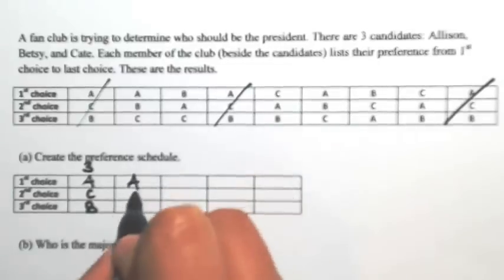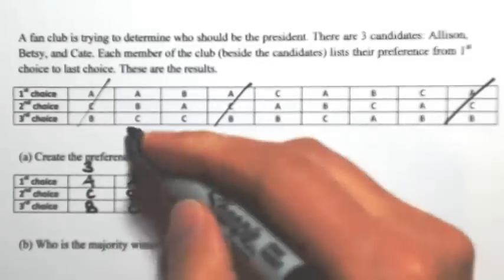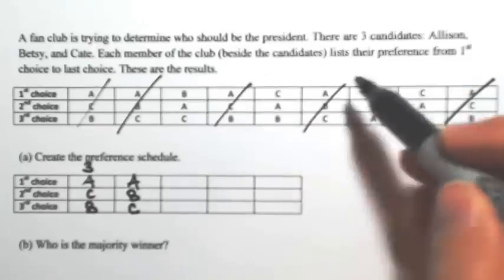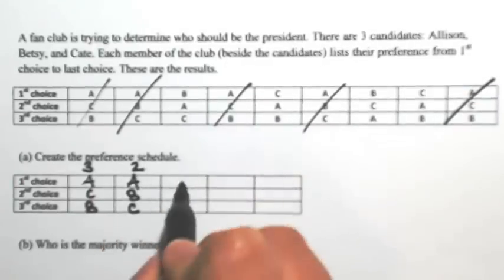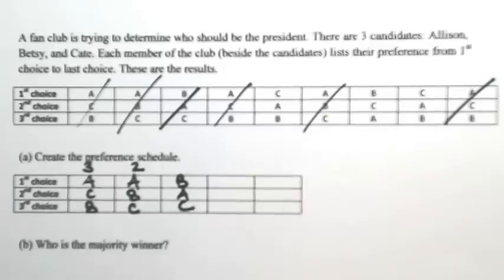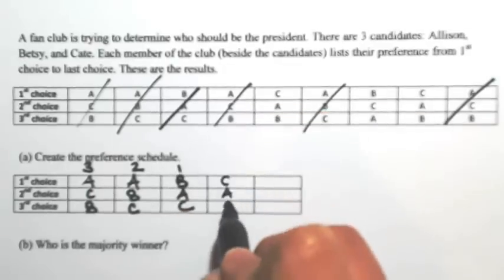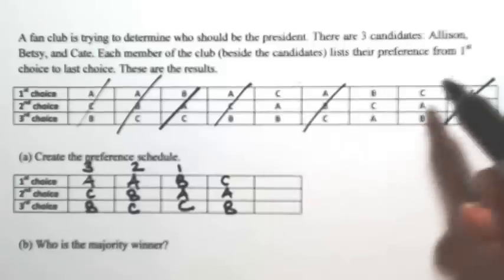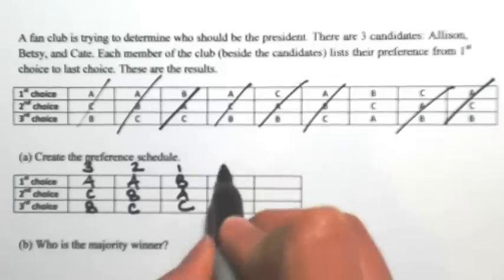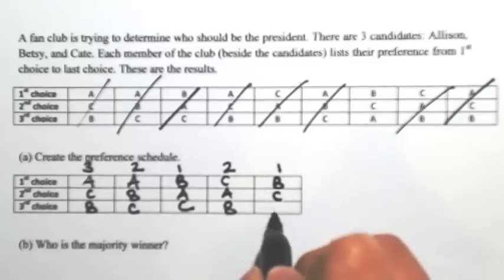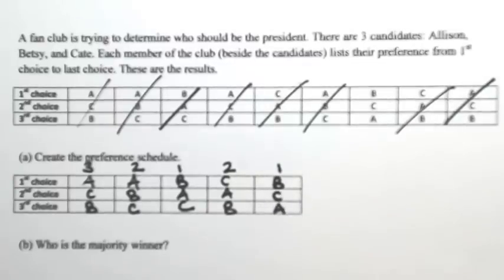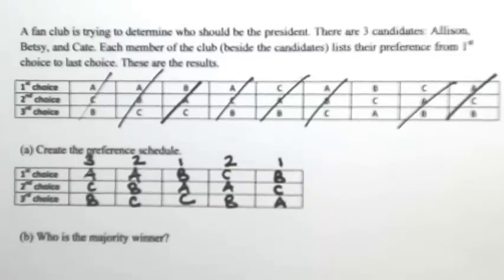The next one is A, B, C — two people. Then B, A, C — one person. C, A, B — two people. And one person for B, C, A. So this is a more condensed version with all of the votes.